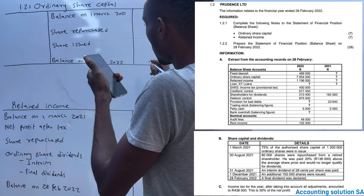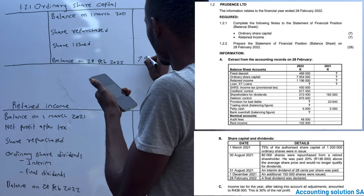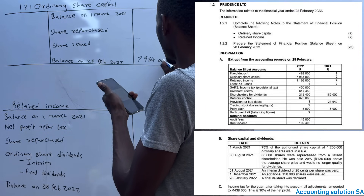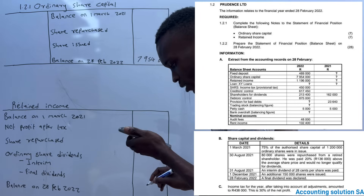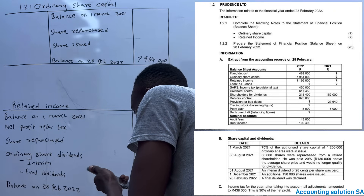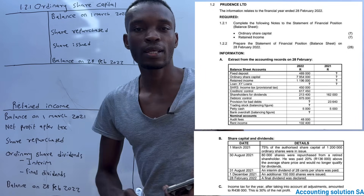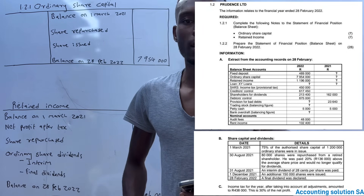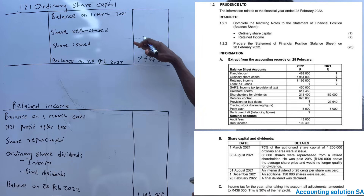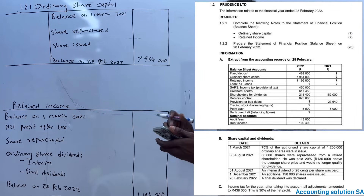Under ordinary share capital we have an amount of seven million nine hundred and fifty-four thousand. Under retained income we have one million one hundred and ninety-six thousand. It's not always the case that you will be given an opening balance and start from top to bottom - sometimes they will give you a closing balance like in this case.